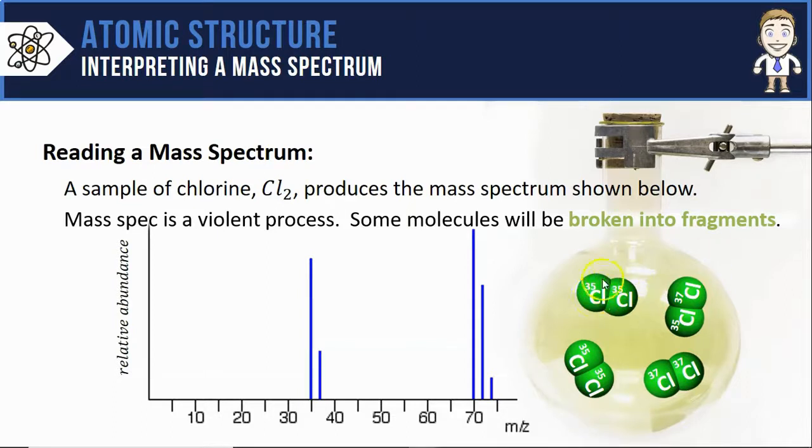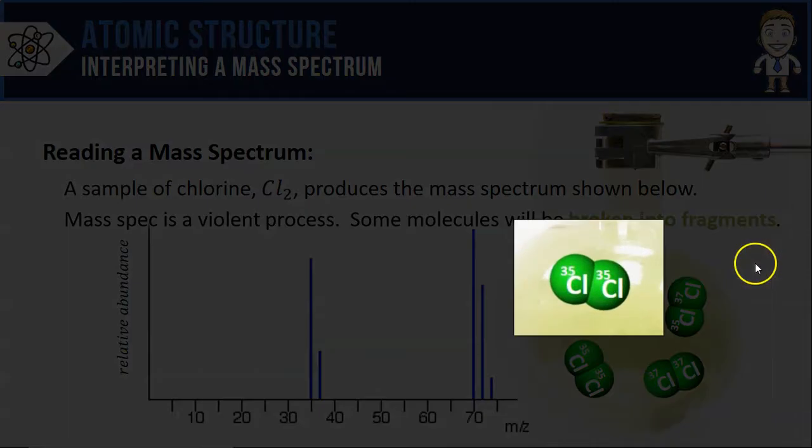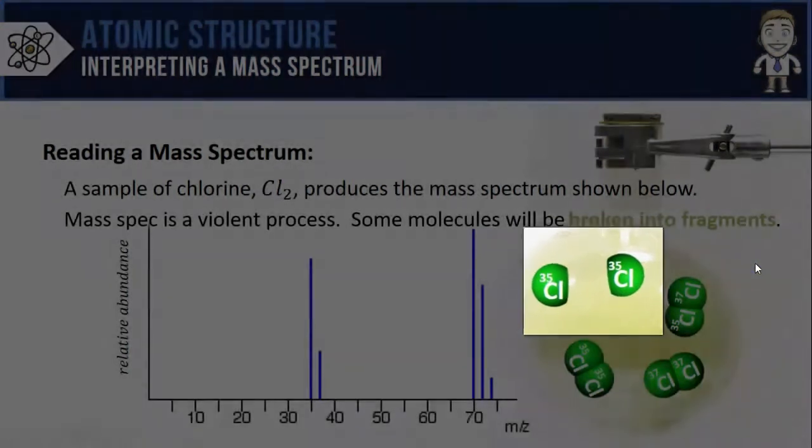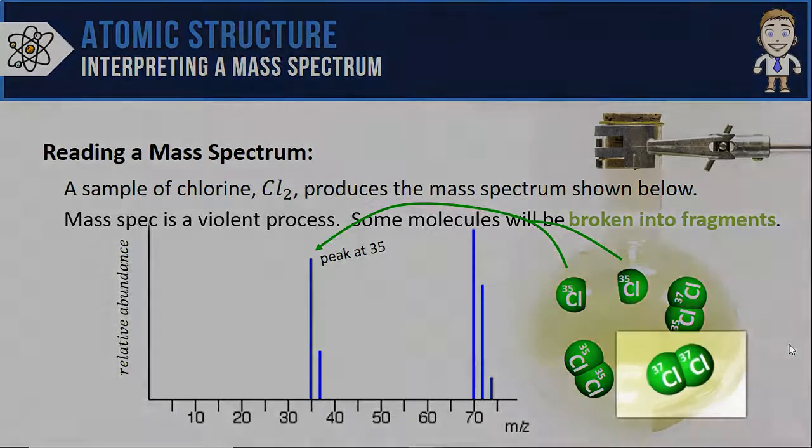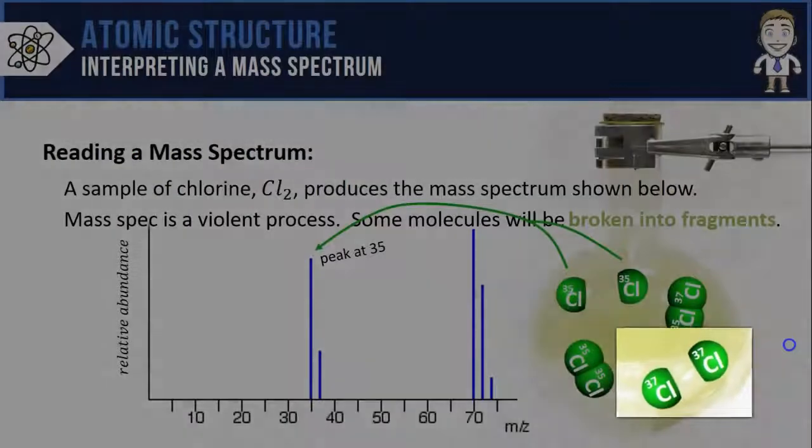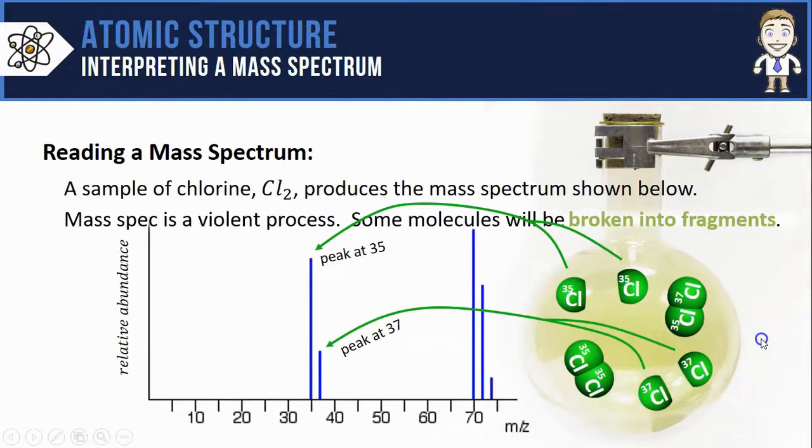So let's say that this Cl2 molecule right here is actually split in two. That means the mass spectrometer isn't going to read it as a mass of 70 because it no longer exists. The spectrometer will now read the masses of these separated atoms, that explains the peak we see here at 35. This also means that some of my separated chlorine atoms will also be the isotope of the mass of 37, explaining the smaller peak at 37.